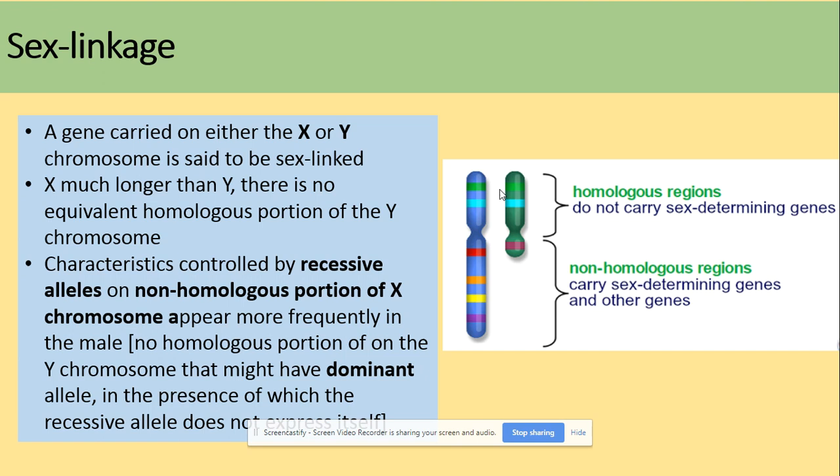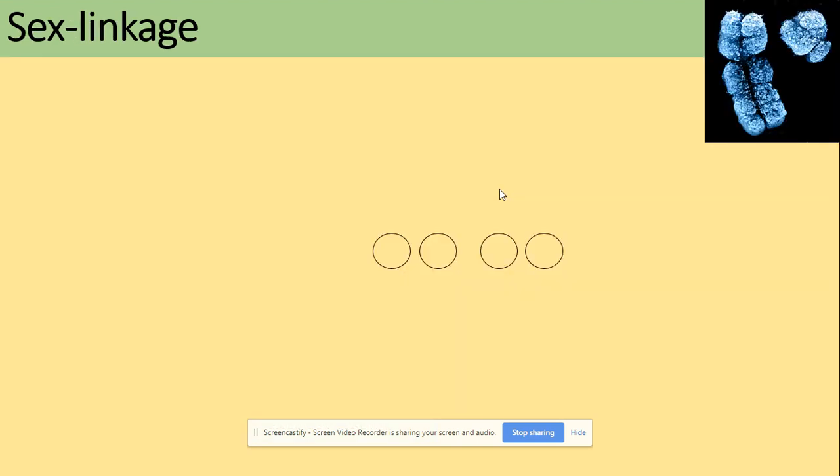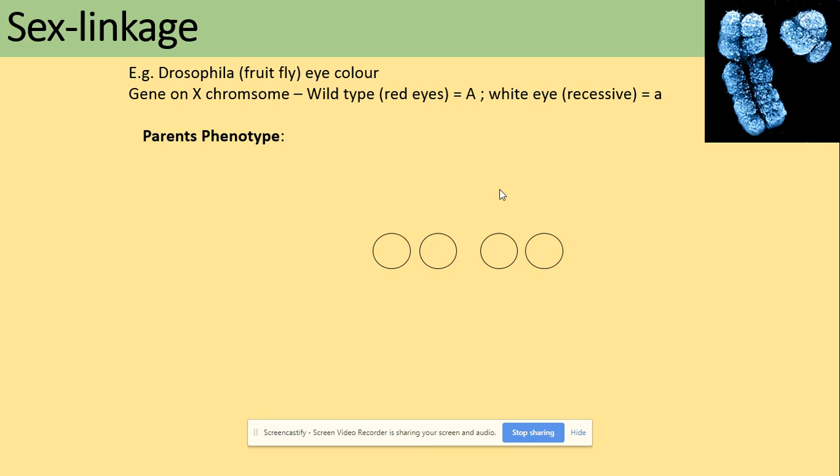Let's have a quick example of how this works. We're going to look at eye color, and this characteristic is carried on the X chromosome. The wild type is represented by a dominant allele (red eyes), and the white eyes are represented by recessive allele a. The parents we're going to use for this cross will be white-eyed and wild type.